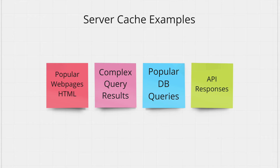Let's look at a few examples of server cache. Say you have a website of book reviews and every book has its own HTML page. You can cache the HTML files of your most popular books so when a user visits your website for a popular book you don't need to construct the HTML every time — you can just serve the page from your cache. Another good use case is caching results of complex database queries. It's common to have DB queries that take more than 100 milliseconds, so instead of computing these query results every time, you can calculate it once and stick it in the cache for some time.